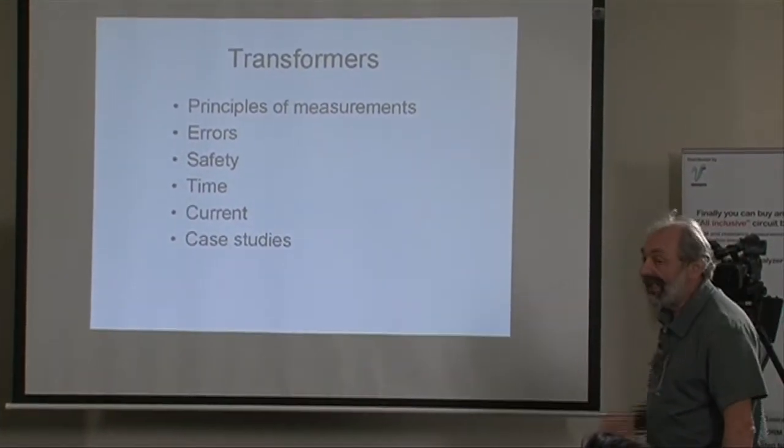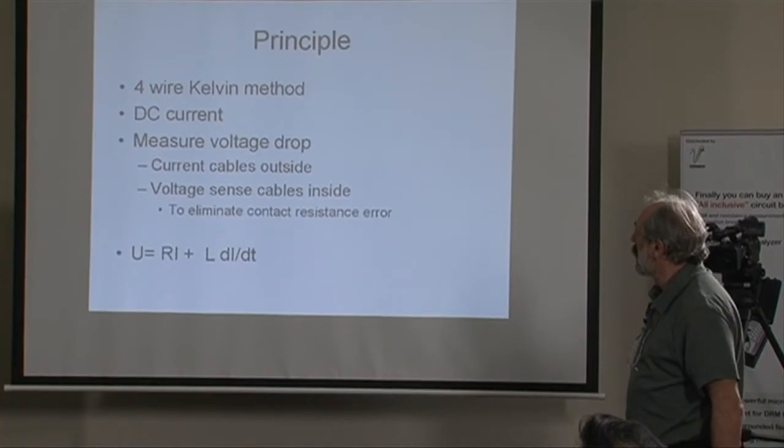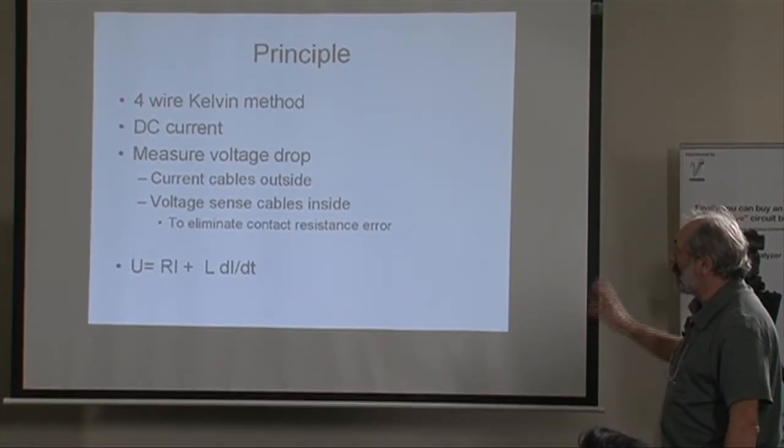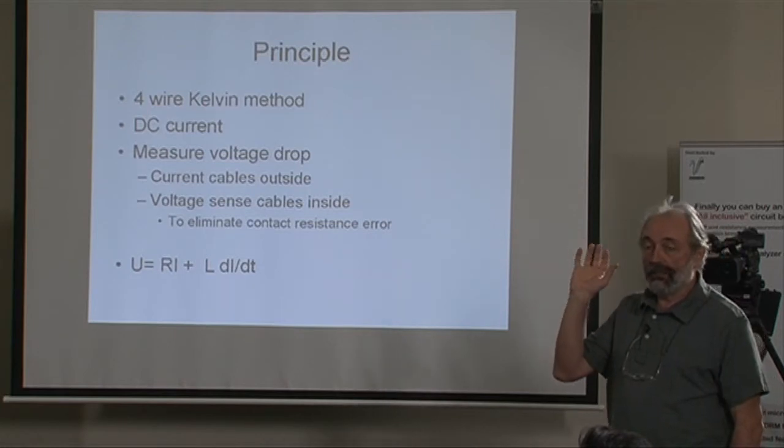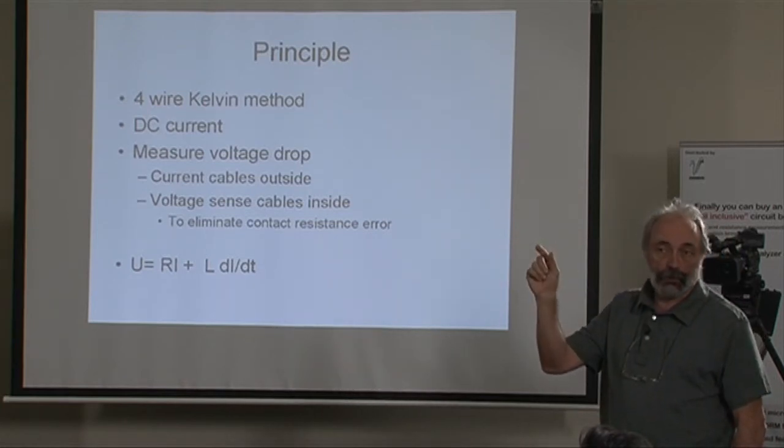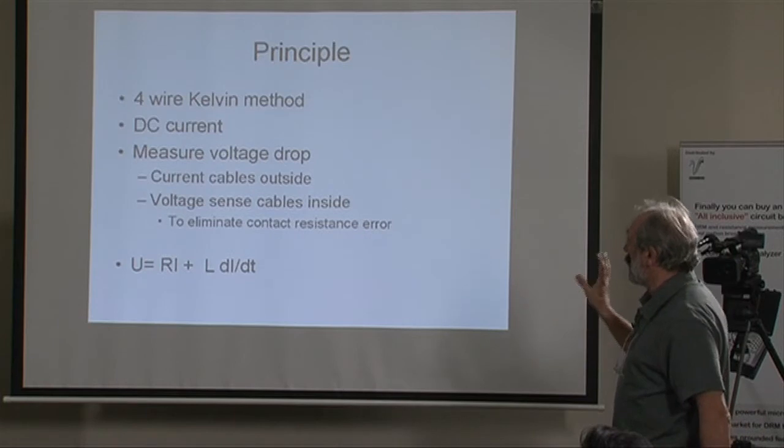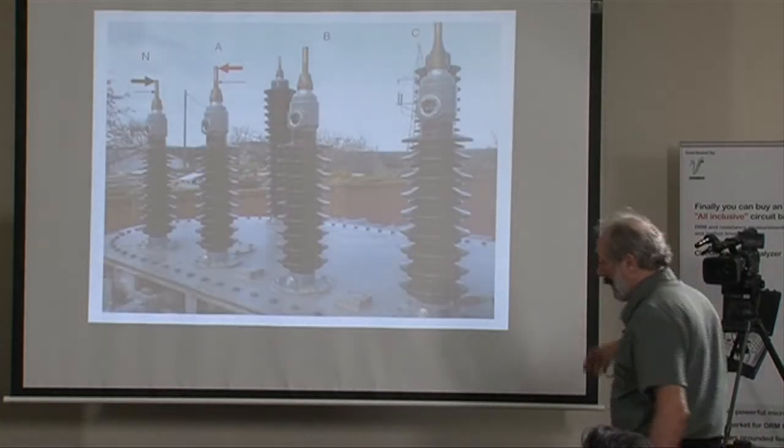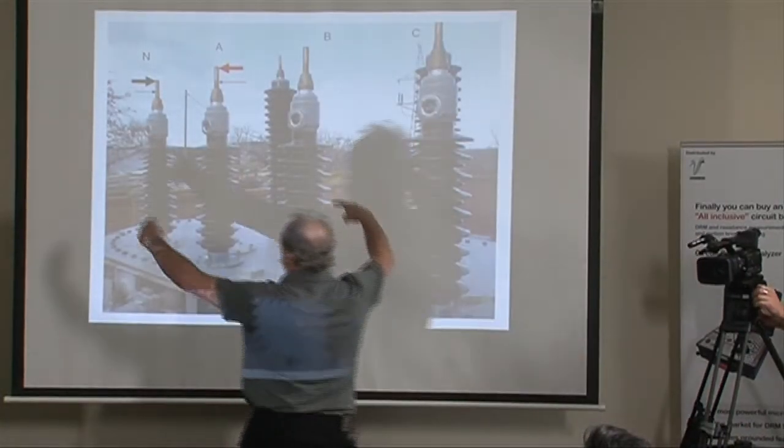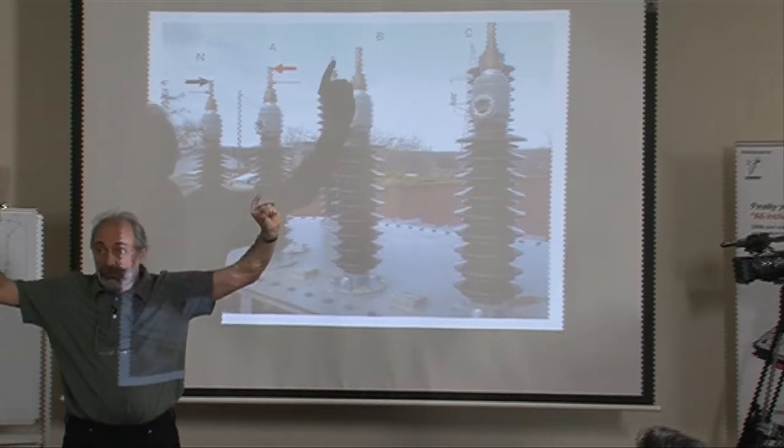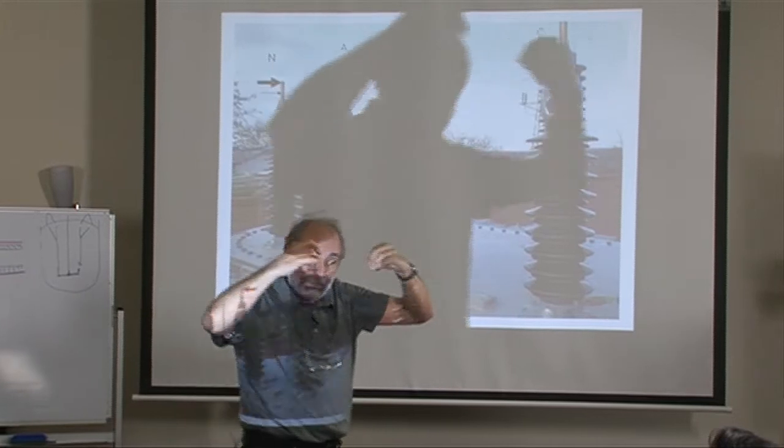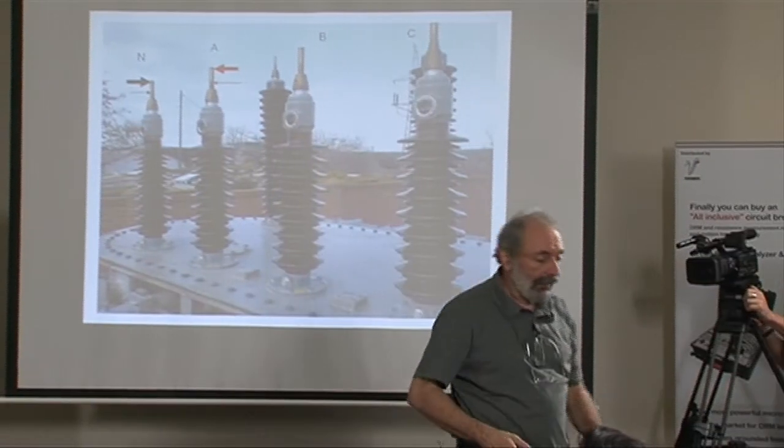First issues: you do a four wire Kelvin method, which means you apply current and you measure voltage drop. Easy. How do you connect? You put current up here, so it's a thick wire, and you put voltage inside, it's a thin wire.